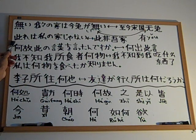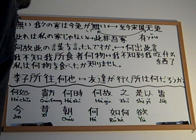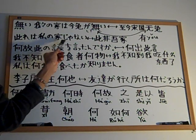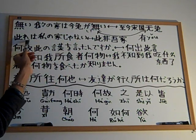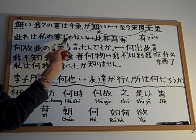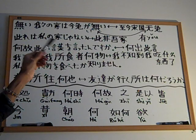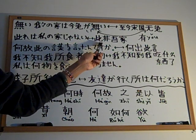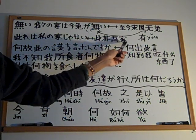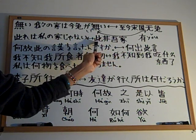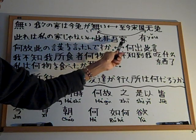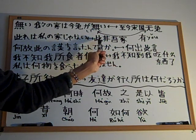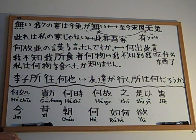The second one — let me read the Japanese: 'kore wa watashi no uchi janai,' meaning 'this isn't my home.' Now the classical Chinese equivalent is 此非吾家 (cǐ fēi wú jiā) — 'this is not my house.'